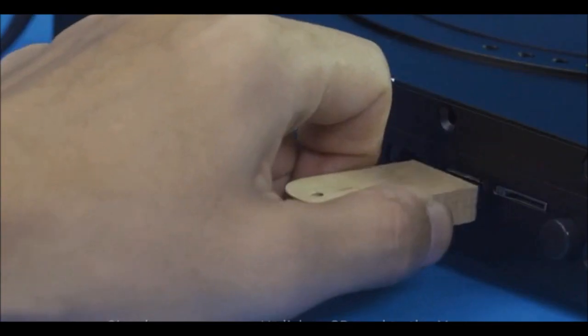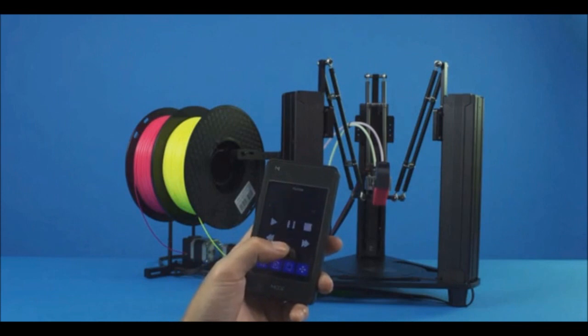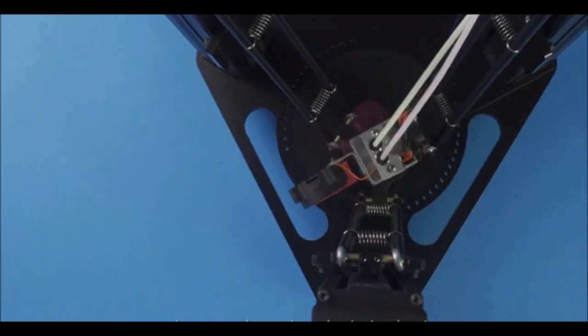Simply connect your U-Disc or SD card to the Moose. Tap the control panel and printing begins.